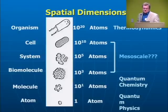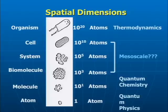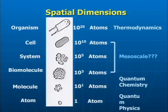As a physicist, I want to understand what sort of physics to apply to different spatial ranges. We would apply thermodynamics to the level of an organism. At the mesoscale, we're grappling with nanotechnology — we don't really know if it's quantum or classical. This is where cells and subcellular structures operate. Biomolecules with 10 to the 3rd atoms stretch into quantum chemistry, and at the single-atom level, quantum physics.